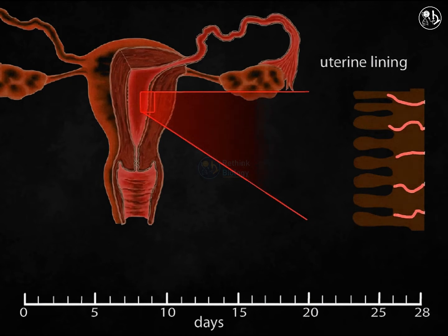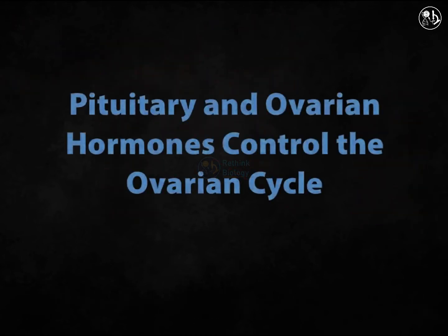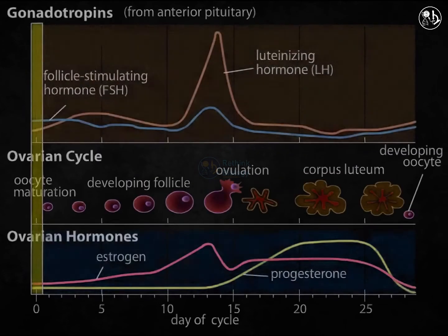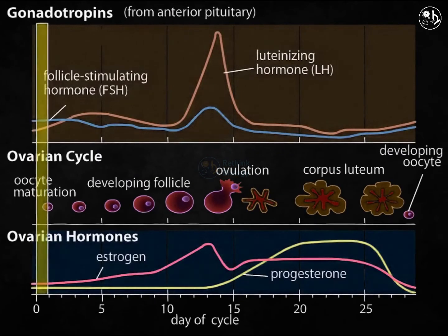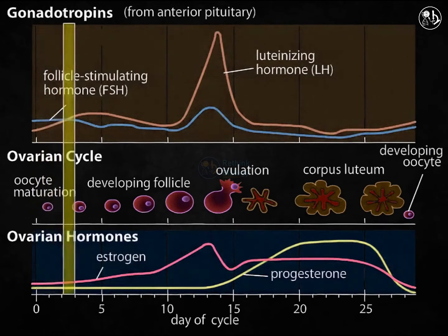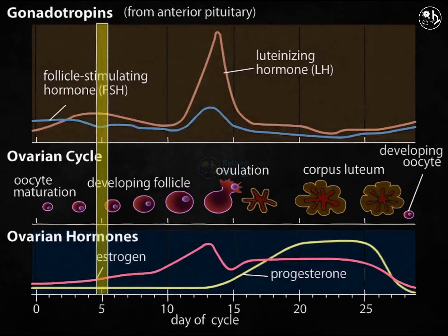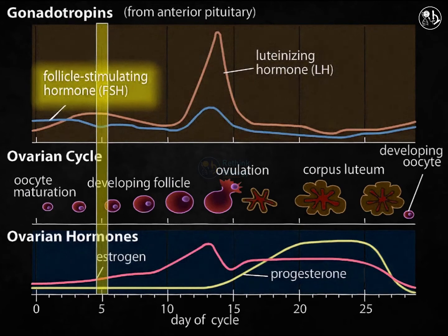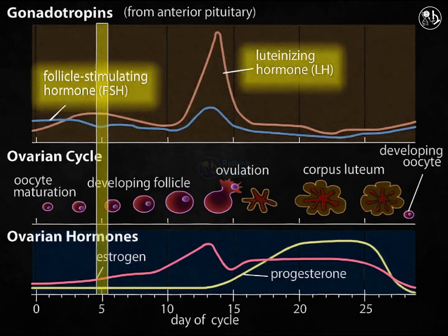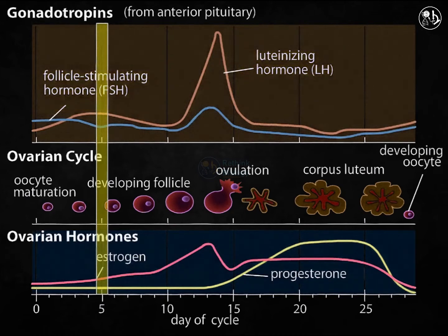The ovarian cycle is governed by a complex interplay of hormones produced by the pituitary gland and the ovary. The anterior pituitary begins to boost the secretion of two hormones a few days before the start of the cycle: follicle stimulating hormone, or FSH, and luteinizing hormone, or LH. Ovarian follicles are stimulated to develop by FSH and LH.